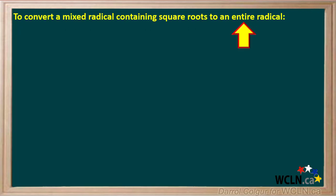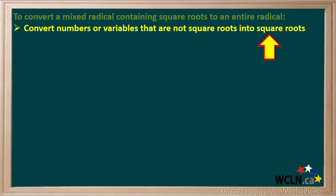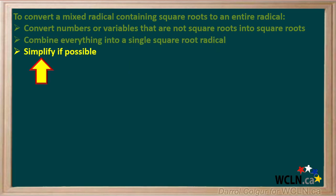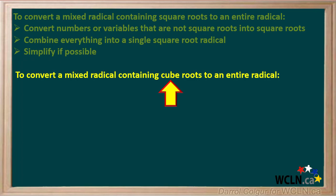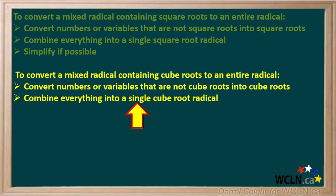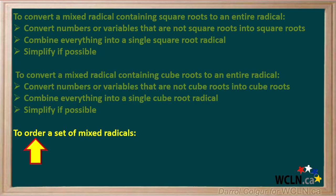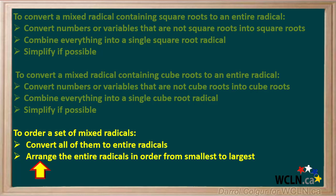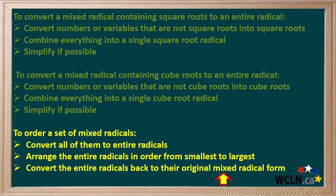To review: whenever we want to convert a mixed radical to an entire radical, start by converting numbers or variables that are not square roots into square roots. Next, combine all these into a single square root radical. Lastly, simplify anything you can in the radical. To convert a mixed radical containing cube roots to an entire radical, start by converting numbers or variables that are not cube roots into cube roots. Next, combine all these into a single cube root radical, and finish by making any simplifications you can. To order a set of mixed radicals from smallest to largest, convert all of them to entire radicals, arrange them in order, then convert the entire radicals back into their original mixed radical form.